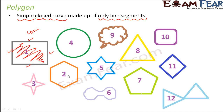Now let us look at number two. Number two again is a closed curve and also a simple curve. In this case, six line segments form this shape. Therefore, this is also a polygon.